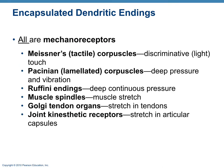Encapsulated dendritic endings are all mechanoreceptors. Types include Meissner's corpuscles for light touch, Pacinian corpuscles for deep pressure and vibration, and Ruffini endings for deep continuous pressure. Muscle spindles respond to muscle stretch, and Golgi tendon organs respond to stretch of the tendon. Lastly, joint kinesthetic receptors detect stretch in the articular capsules.